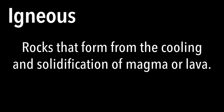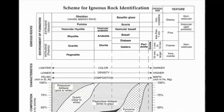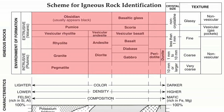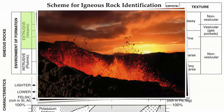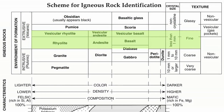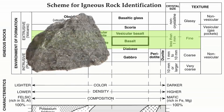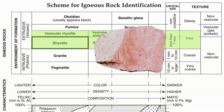Let's begin by looking at igneous rocks. These are rocks that form from the cooling and solidification of magma or lava. The top rocks on the reference table are referred to as extrusive or volcanic, meaning lava erupted on Earth's surface and cooled quickly. Because the lava cooled quickly, mineral crystals were not able to grow very large. Some of these rocks have a fine texture with crystals less than one millimeter in size, like this sample of basalt or this sample of rhyolite. Notice the crystals are very small, almost impossible to see.